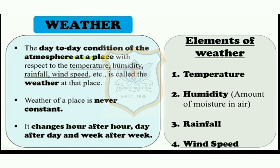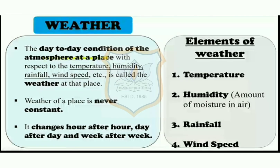The day-to-day conditions of the atmosphere at a place with respect to the temperature, humidity, rainfall, wind speed etc. is called the weather at that place. Weather of a place is never constant — it changes hour after hour, day after day, and week after week. That is why we often say today's weather is too humid or the weather was warm last week.